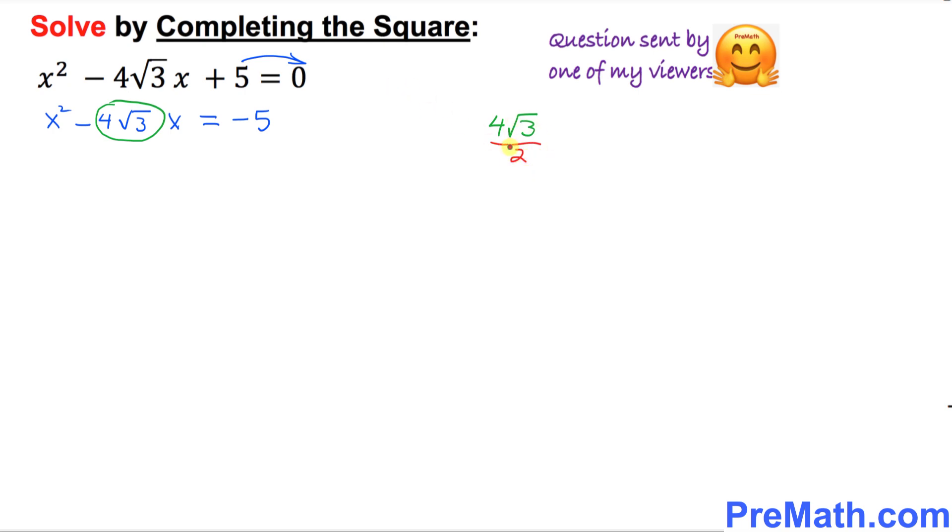Once you divide it by 2, that gives you 2 times square root of 3. And the final step is to square 2 times square root of 3. So this is the quantity we are going to add on both sides of this equation. Let's go ahead and do that.